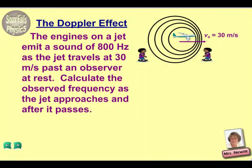Hey everyone, here's your Sioux Falls physics teachers, and today we're going to look at a problem involving the Doppler effect. We have a jet airplane emitting a sound of 800 Hz and traveling at a velocity of 30 meters per second. We need to calculate the perceived frequency when that jet approaches and passes a stationary observer.